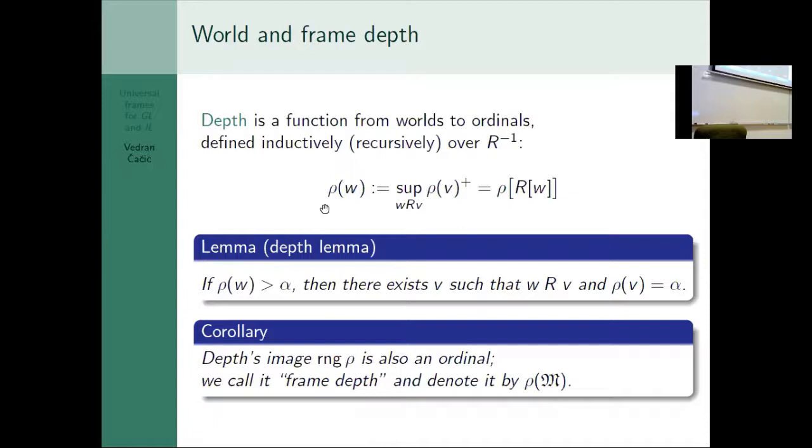The main thing here is that you cannot skip ordinals. If you have depth greater than omega, then you must have an R successor that has depth exactly omega. The corollary is that the range is also an ordinal, and we call it depth of the frame. If we have a frame with three worlds at depths 0, 1, and 2, then the depth of the whole frame is 3.